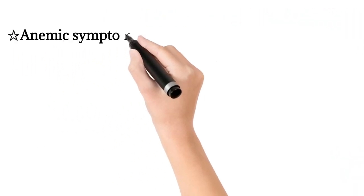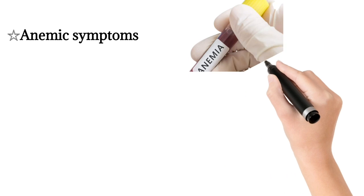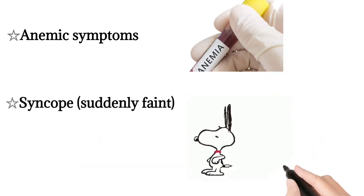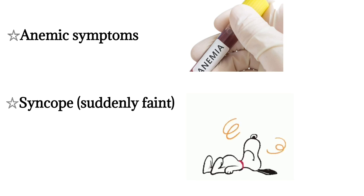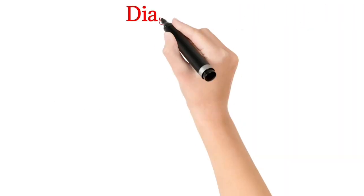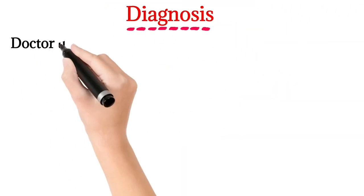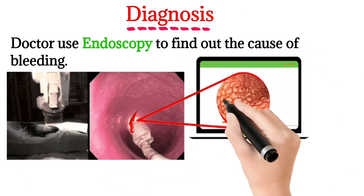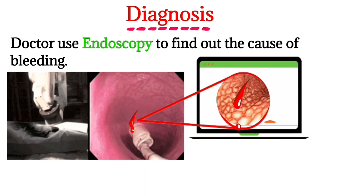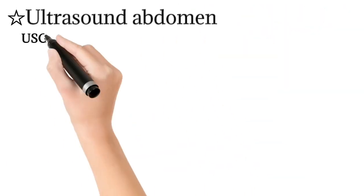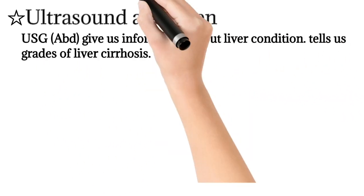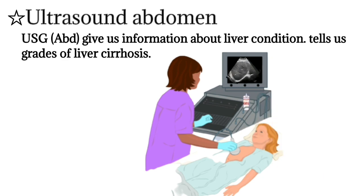Additional clinical features include anemic symptoms such as weakness and fatigue, pallor of the skin, and syncope, which is sudden fainting. For diagnosis, endoscopy is used first to find out the cause of bleeding. Ultrasound of the abdomen gives information about liver condition, such as the grade of liver cirrhosis.